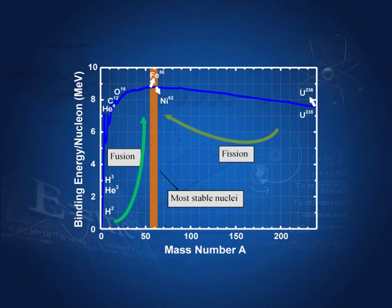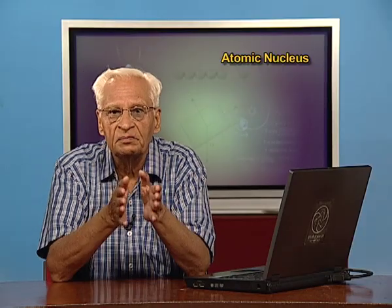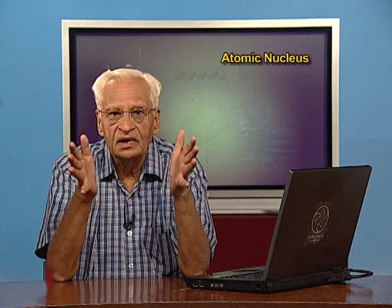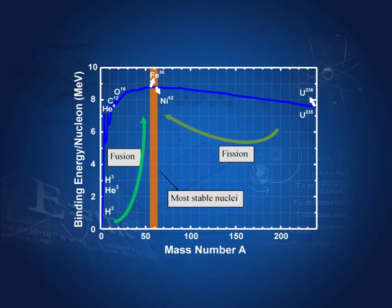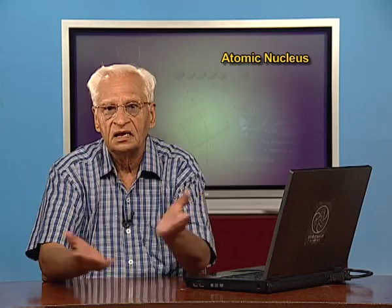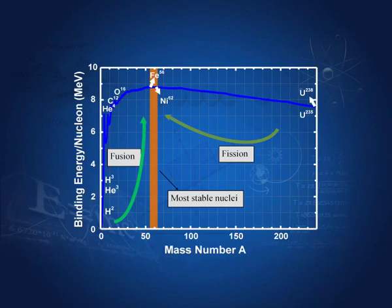There is a tendency for heavy nuclei on the right side to break into two smaller nuclei, both of which migrate towards the stable band — this process is called fission. On the left side, lighter nuclei combine — a process called fusion — and the resultant nuclei have higher binding energy per nucleon, meaning they are more stable. Both fusion and fission give us energy because the binding energy per nucleon increases, and the difference is given out.